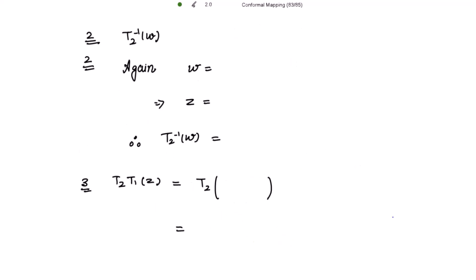For t2 inverse, we take w = z over (z + 1) and calculate z in terms of w. We get z equal to negative w over (w - 1). Since w = t2(z), we get t2 inverse(w) = z, so t2 inverse is equal to negative w over (w - 1).